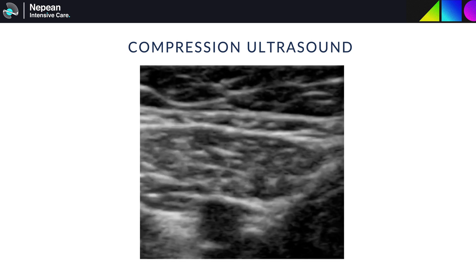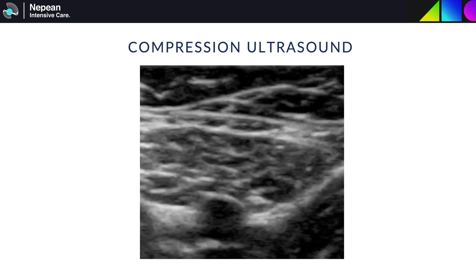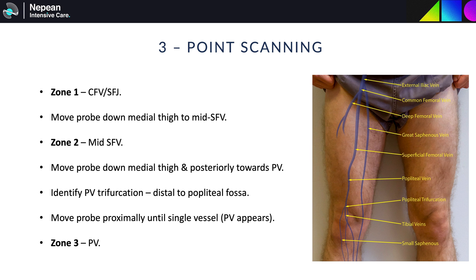In very acute thrombus, it may not be echogenic enough to visualise, therefore relying on compression ultrasound and colour filling defects is important. Three-point scanning is a quick technique to identify the points where the majority of the thrombus is formed. Scanning begins at the common femoral vein at the junction with the great saphenous vein. From here, the probe is moved inferiorly into the adductor canal where the superficial femoral vein lies underneath the femoral artery. The last point is the popliteal fossa, where the popliteal vein and trifurcation are identified. Whilst this is a brief scan, it can be extended to see the regions in between.